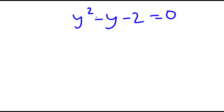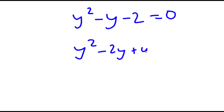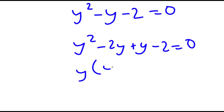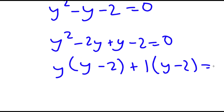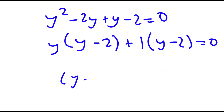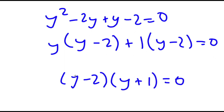Now I'm going to factor this by rewriting it as y squared minus 2y plus y minus 2 is equal to 0. Now I'm going to factor by grouping. So I have y times y minus 2 plus 1 times y minus 2 is equal to 0. So now if I factor out y minus 2, I get y minus 2 times y plus 1 is equal to 0.